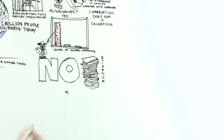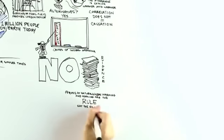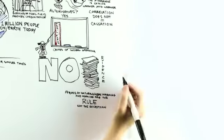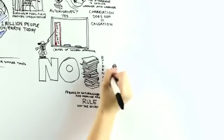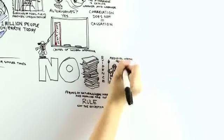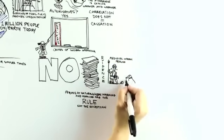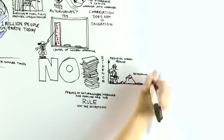Before global warming became the most popular climate research topic, most of the evidence that had been published over the years suggested that periods of natural global warming and cooling are the rule, not the exception. A number of indirect measures of past temperature, so-called temperature proxies, suggest that it might well have been warmer during some decades around 1000 AD, during the medieval warm period, than it has been recently.